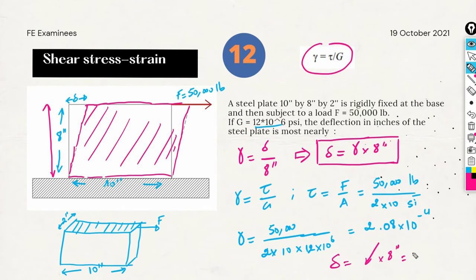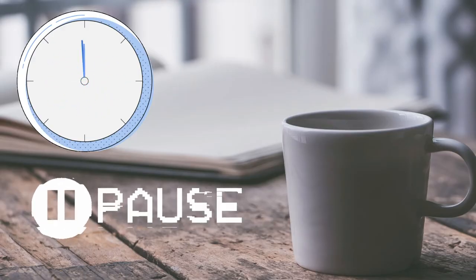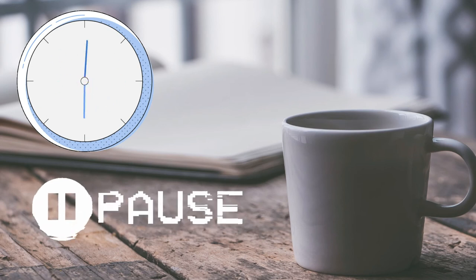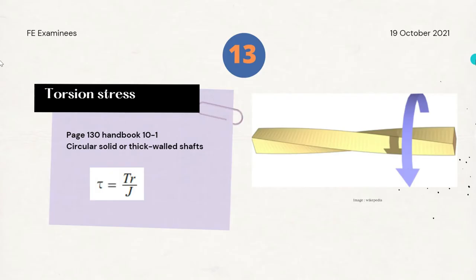Our delta will be this gamma value multiplied by 8 inches, which equals 1.67 times 10 to the minus 3 inches.